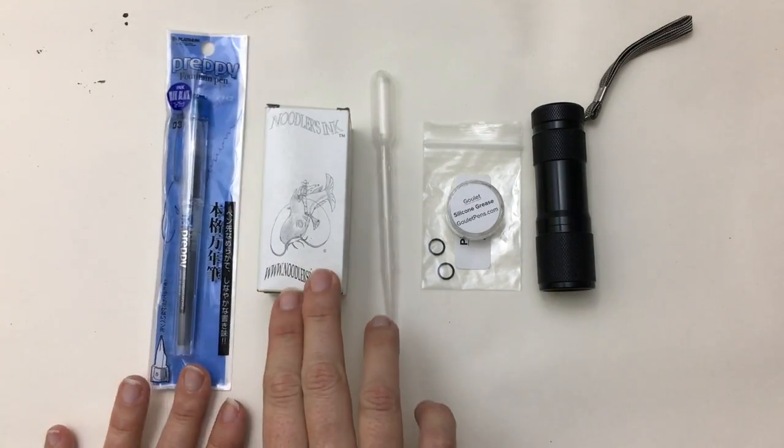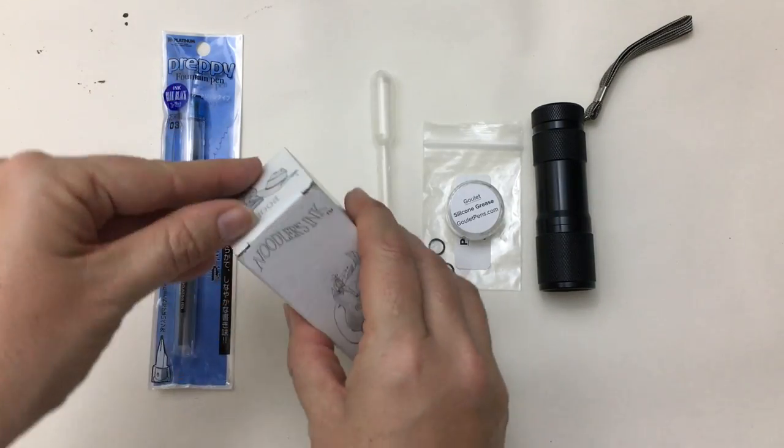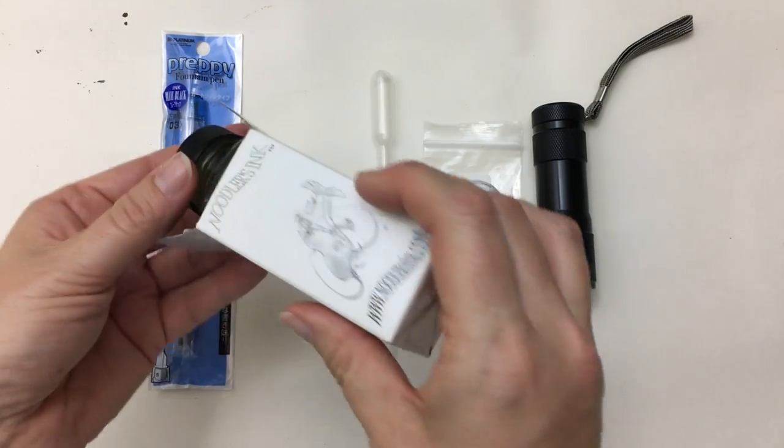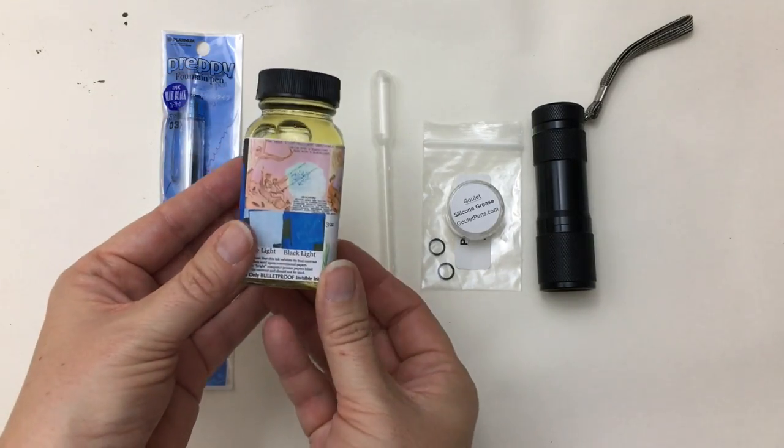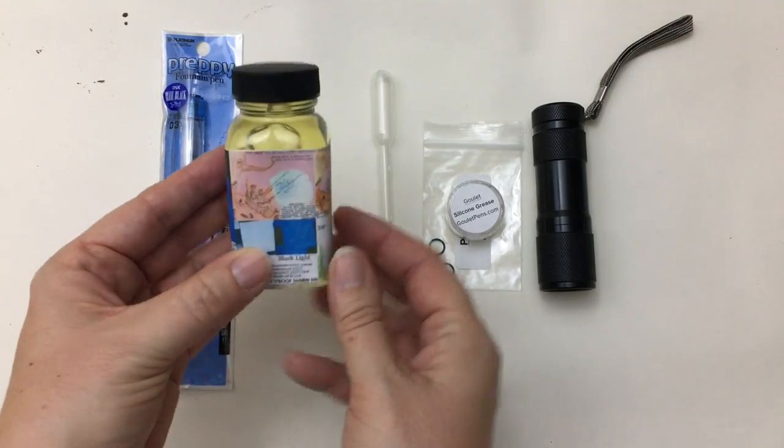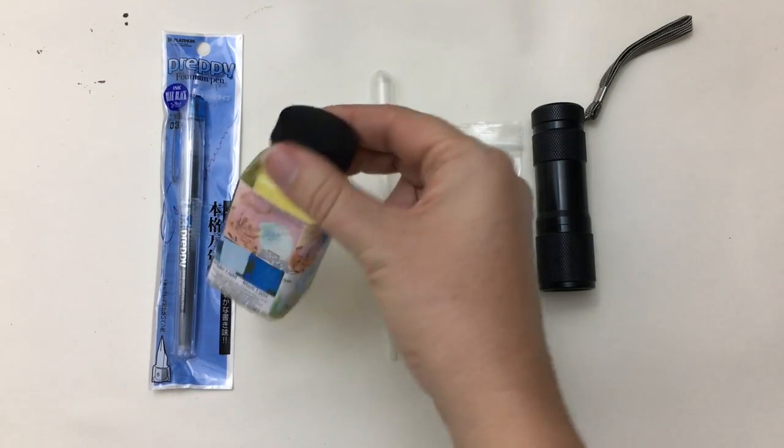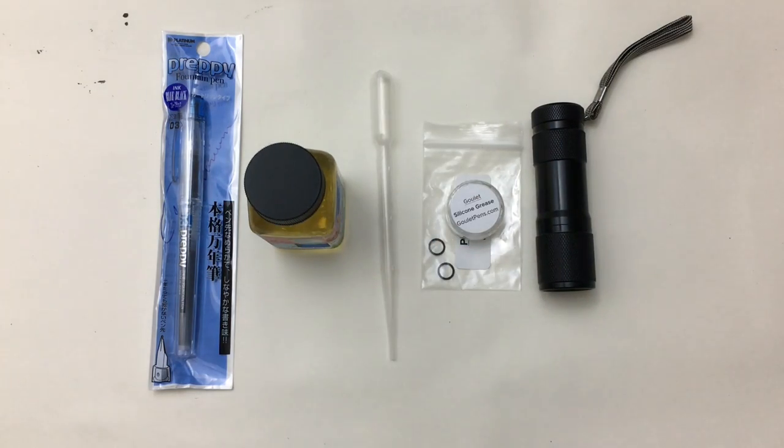You will also need some ghost ink by Noodlers. Look there, boo. This is a little more pricey. And if you don't want to spend a lot of money on the bottle, you could probably go to like Goulet Pens or something like that and maybe try to find a sample. But I need a big bottle and I get it for a good price on Amazon.